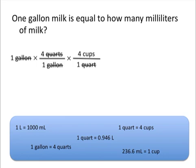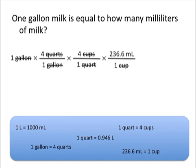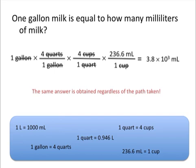Because the problem is asking us for milliliters, we need to go one more step. Cups is the unit we want to cancel out, so we need cups on the bottom. Looking at our conversion factor choices, we see that 1 cup is equal to 236.6 milliliters, so we place 236.6 milliliters on top. This allows us to cancel out cups. Starting with 1, we multiply by all numbers on top and divide by all numbers on the bottom, and we end up with the same answer of 3.8 times 10 to the third milliliters. This confirms that there are often multiple correct ways to solve a dimensional analysis problem.